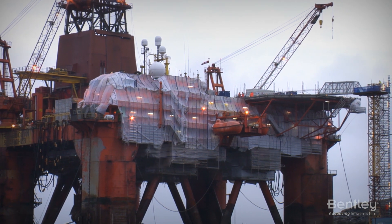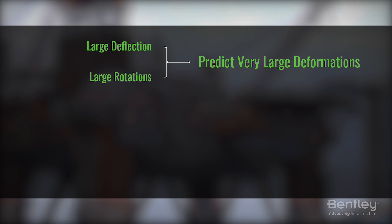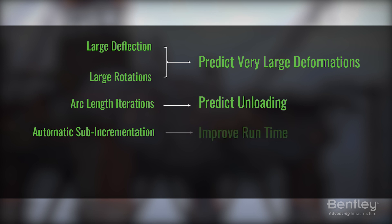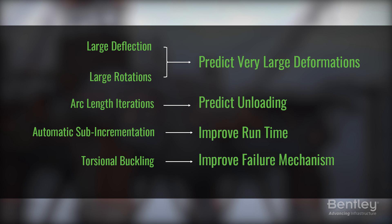The new solver in SACS Collapse Advanced includes large deflection and rotation theories in addition to the arc length iteration method, which allows the application to accurately predict deformations and complex failure modes. The smart load step convergence algorithm, also known as sub-incrementation, is included in the new SACS Collapse solver and dramatically improves runtime performance by avoiding the need for manual reruns. Engineers can predict realistic failure modes due to the inclusion of torsional strains.